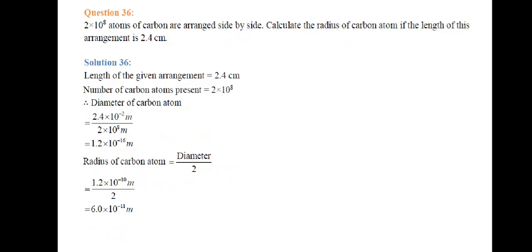Next: 2 × 10⁸ atoms of carbon are arranged side by side. Calculate the radius of a carbon atom if the length of this arrangement is 2.4 centimeters. Similar to the previous question, the length of the given arrangement is 2.4 centimeters and the number of carbon atoms is 2 × 10⁸.